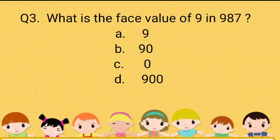Question 3: What is the face value of 9 in 987? Option A: 9. Option B: 90. Option C: 0. Option D: 900. The answer is 9, as the face value of a digit is the digit itself.